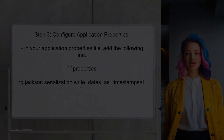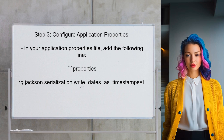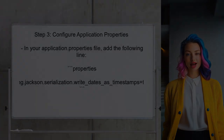After that, the user should ensure that the application properties are set correctly to avoid any issues with date formatting. Specifically, they should configure Jackson to write dates as timestamps.